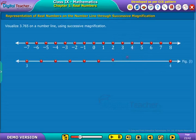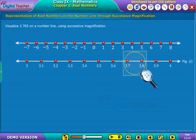make 10 equal parts and mark them as 3, 3.1, 3.2 and so on up to 4 as shown. Now look at the portion in between 3.7 and 3.8 using magnifying glass and realize that 3.765 lies between 3.7 and 3.8 as shown in figure 1.